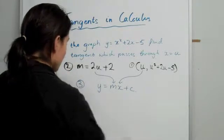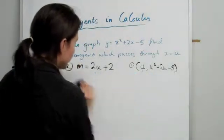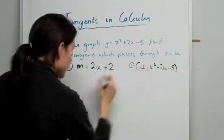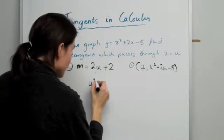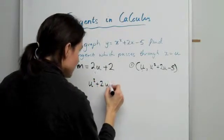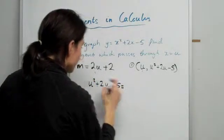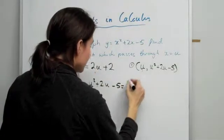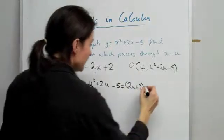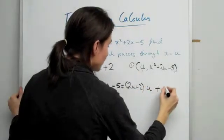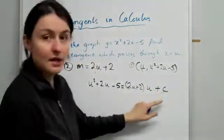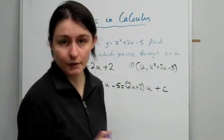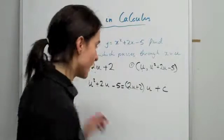Now, I'm just going to rub this out because I run out of room. Okay, now let's just plug everything in. So we know that y is u² + 2u - 5, and it's equal to the gradient, which is this, times your x value, which is u. And then we don't know what our plus c is. So before we do anything, we need to find an expression for c, and then we're going to express it as a straight line.